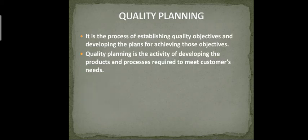Quality Planning is the process of establishing quality objectives and developing plans for achieving those objectives. A company sets quality objectives — product quality, trust, rating, quality level — to meet customers' needs. Quality Planning is the activity of developing the product and process required to meet customers' needs.